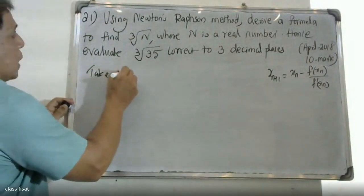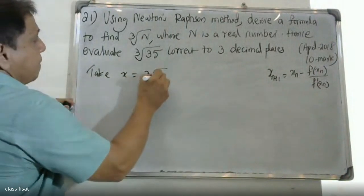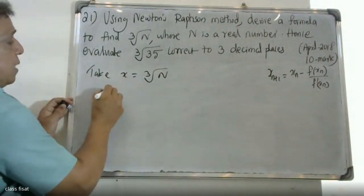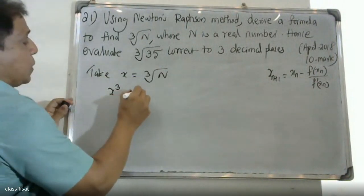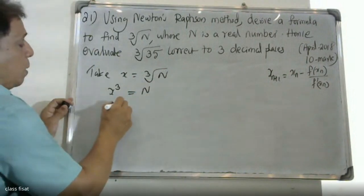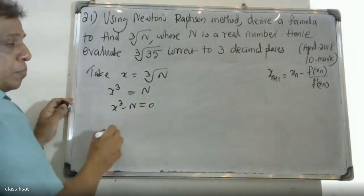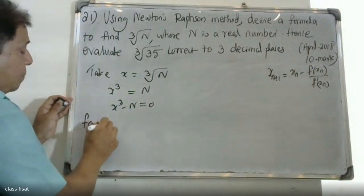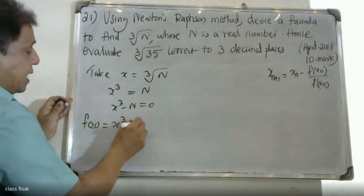Let x equal the cube root of n. Cubing on both sides gives x cubed equal to n, which means x cubed minus n equals zero. So we define f(x_n) equals x_n cubed minus n.